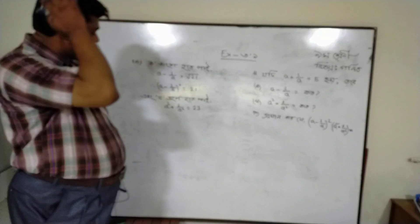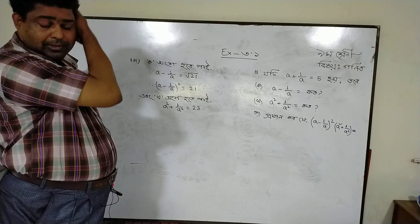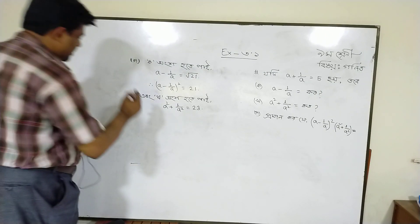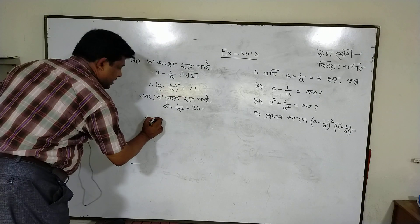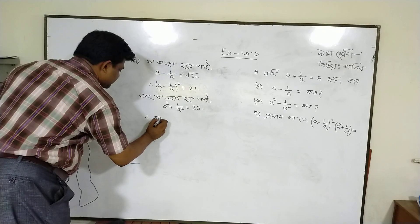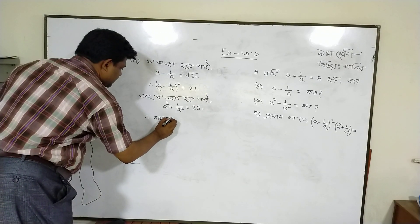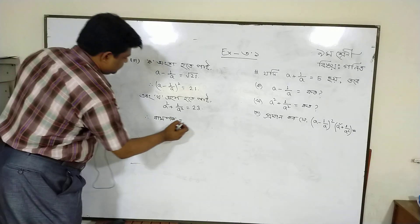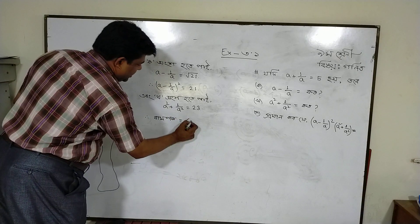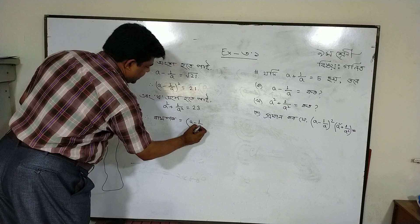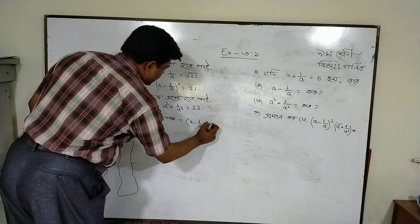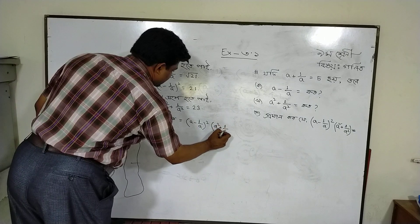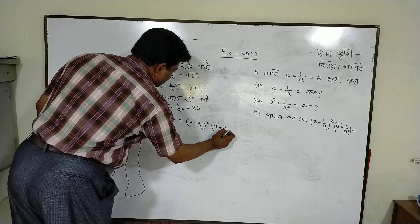A minus 1 by a, whole square, into a square plus 1 by a square. A minus 1 by a, whole square, into a square plus 1 by a square. The result: a minus 1 by a, whole square, into a square plus 1 by a square equals the final value.